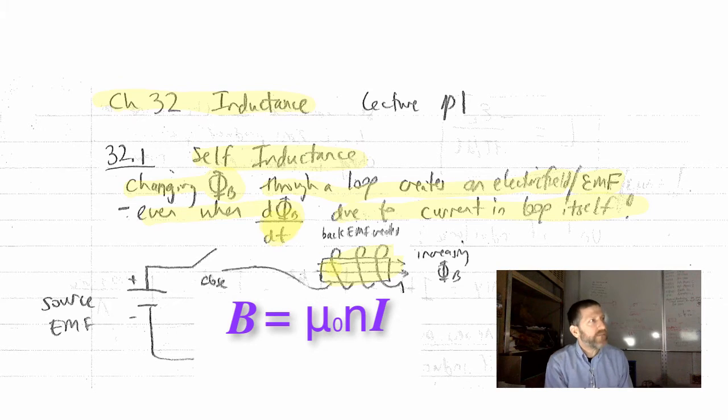Easter Bunny, the magnetic field is equal to mu naught, little n, the number of turns per unit length, times the current in the coil. That is the magnetic field.